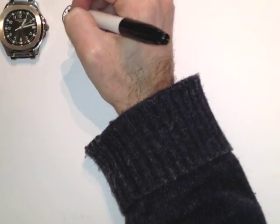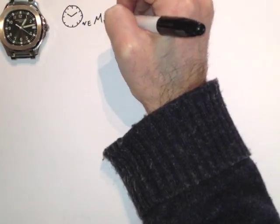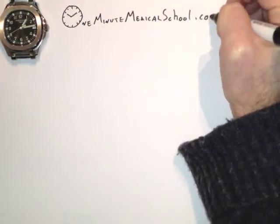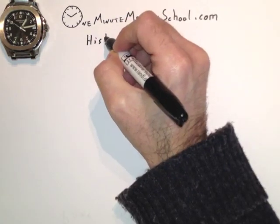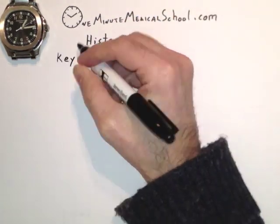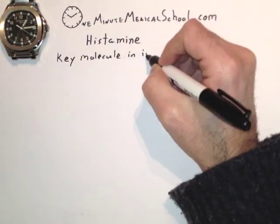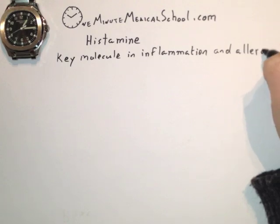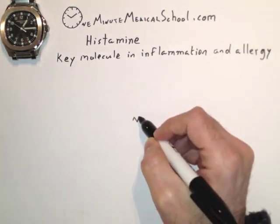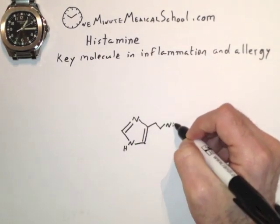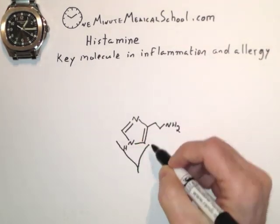Histamine is the master molecule of allergy and it is also crucial in inflammation. Its name derives from its amine side group. It is stored in mast cells in tissue or basophils in blood, inside of storage vesicles.